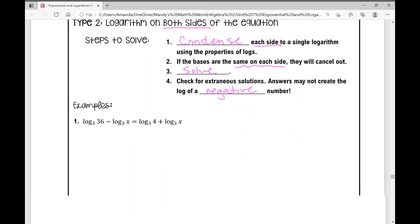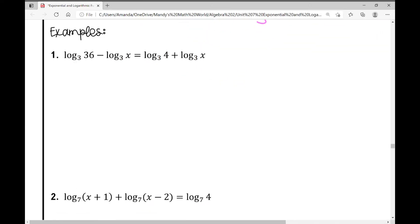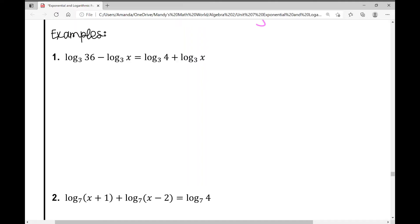Let's look at our examples and we only have two examples today. In this first one, log base 3 of 36 minus log base 3 of x equals log base 3 of 4 plus log base 3 of x.